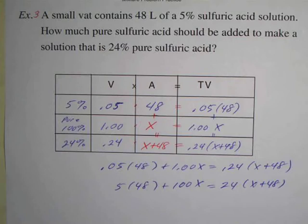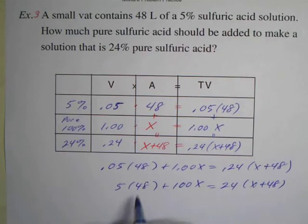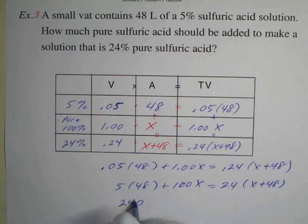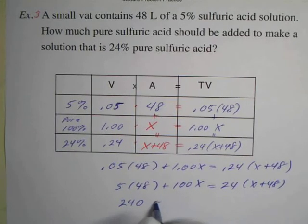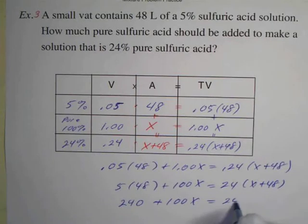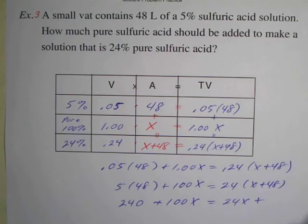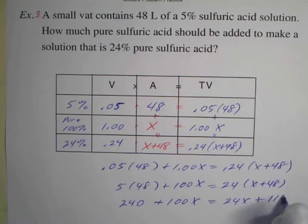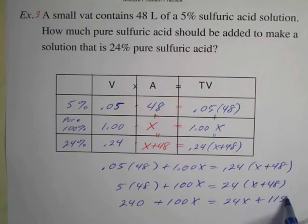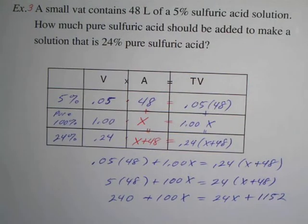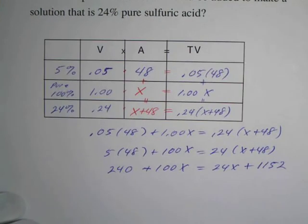And then we get our calculator out. Now actually this isn't too bad because 5 times 8 is 40, carry 4, 5 times 4 is 20 plus 4 is 24. So you can do that in your head, but calculator just to play safe. And we got 24x, and 24 times 48, yeah I would probably calculate this out. And we get 1152. Then I'll try to get all my x's on the same side, so I'll subtract 24x from both sides.